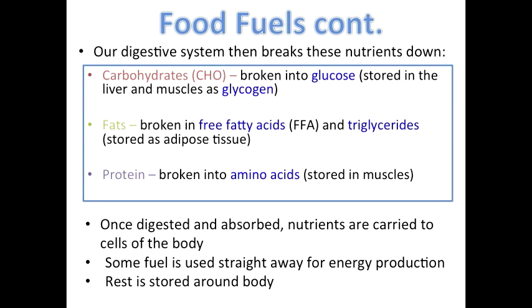These are what each of the nutrients is broken down into. Carbs are broken into glucose and stored as glycogen. Fats are broken into free fatty acids and triglycerides. And protein is broken into amino acids. These are digested, absorbed and then either stored or used for energy.